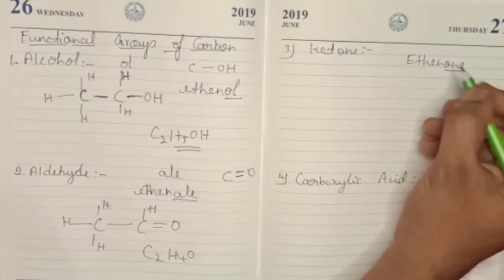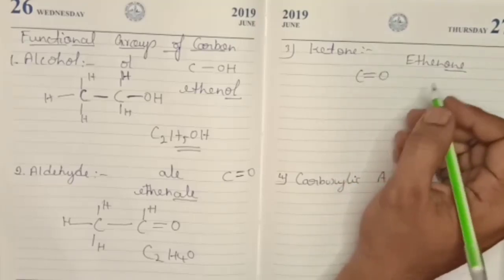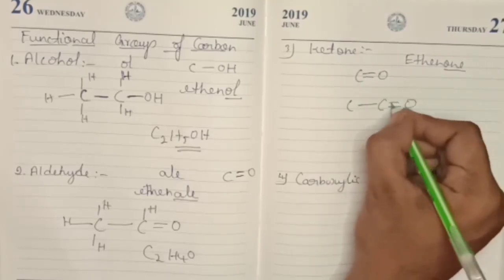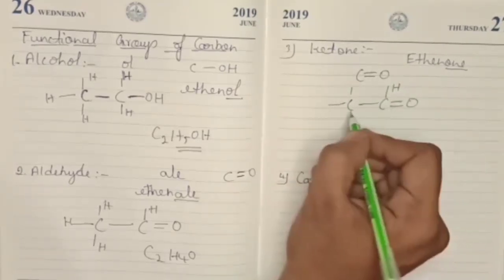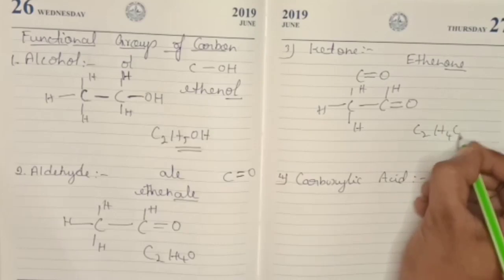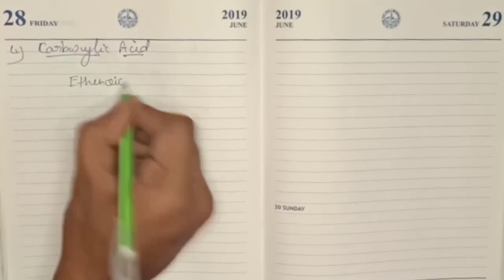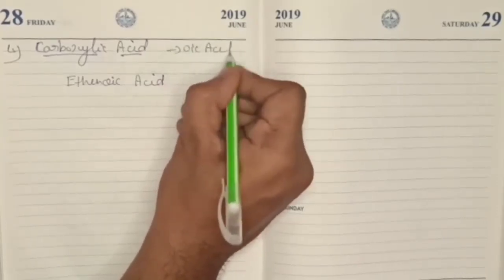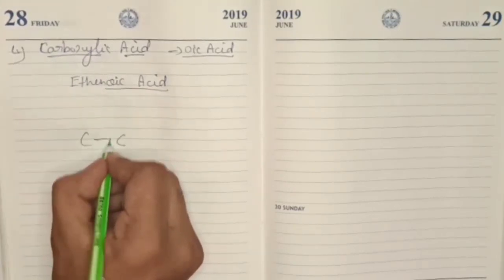For ketone, the suffix is -one. Example: ethanone. A double-bond oxygen replaces two hydrogens, similar to aldehyde. Eth- means two carbons with a single bond. One carbon has three bonds with hydrogen; the other carbon has one bond and three bonds with hydrogen — with the double-bond oxygen on the carbon. The formula is C2H4=O. For carboxylic acid, the suffix is -oic acid — example: ethanoic acid (C2).